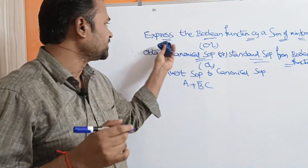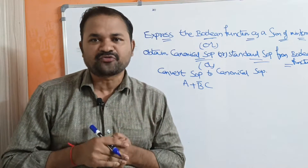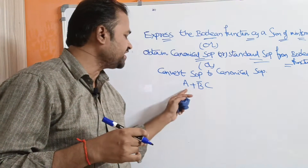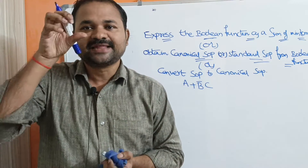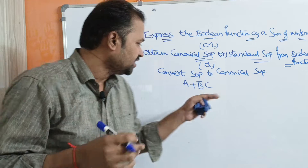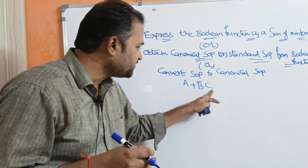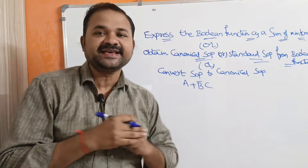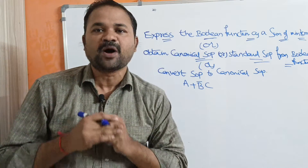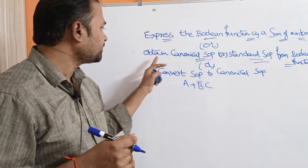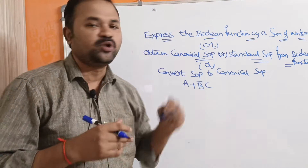Let us see this concept: express the boolean function as a sum of minterms. Here, the function is given as a plus b-bar c. Minterms means each term should contain all the variables. But in the first term, b and c are missing, whereas in the second term, a is missing. So, now we have to represent this expression as a sum of minterms, or obtain canonical SOP from the boolean function.